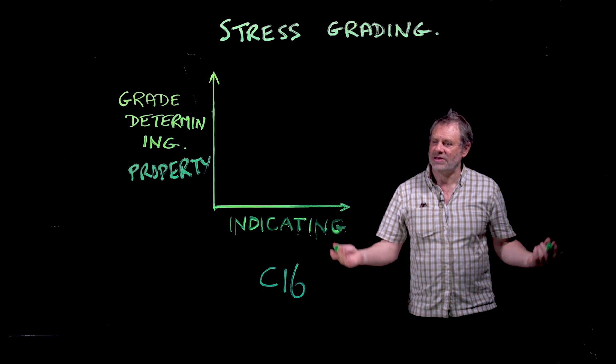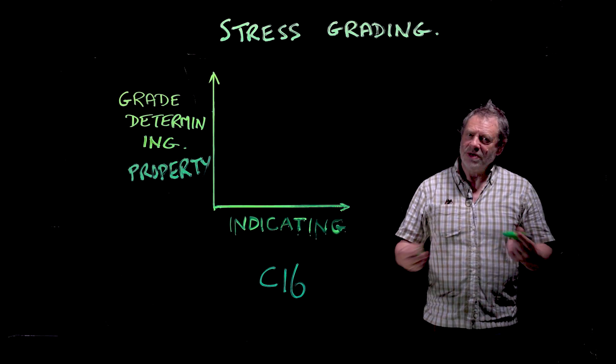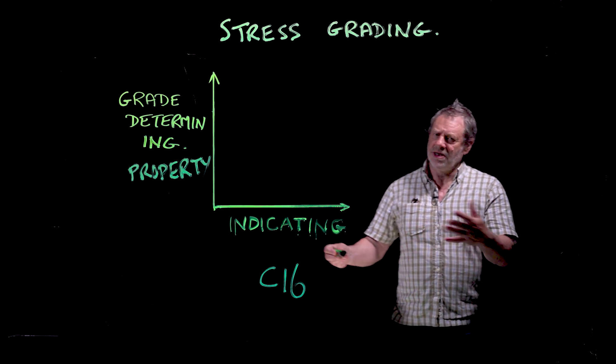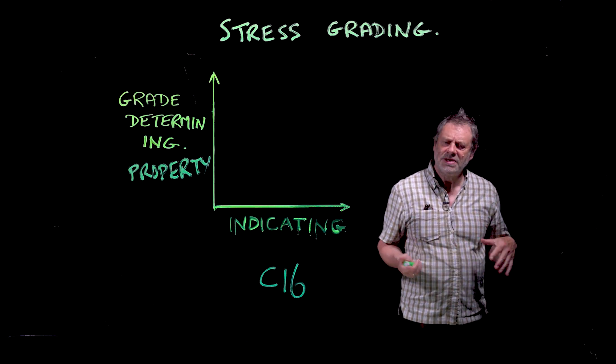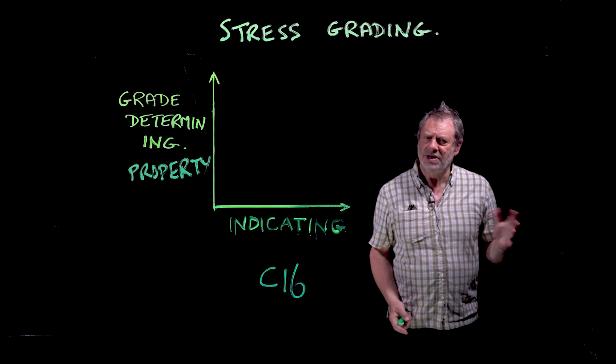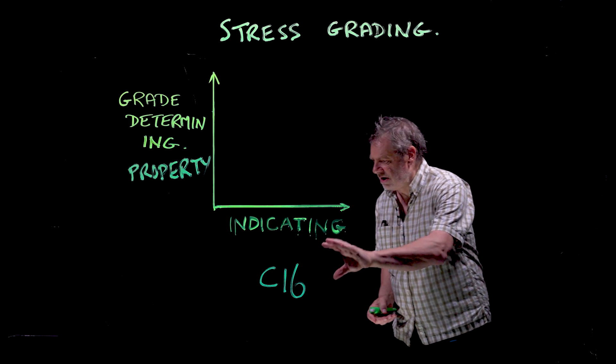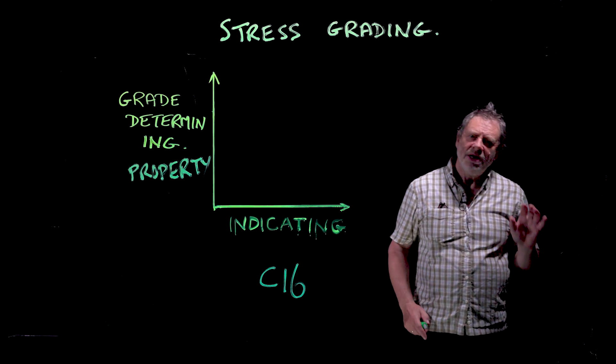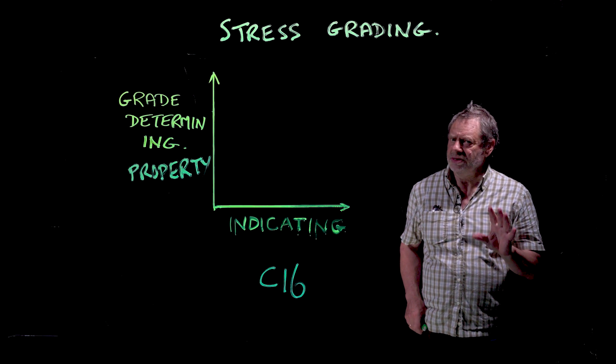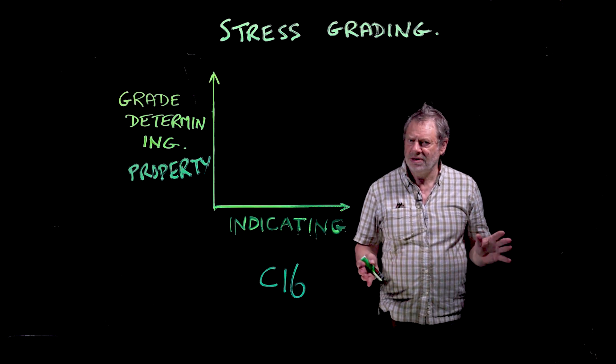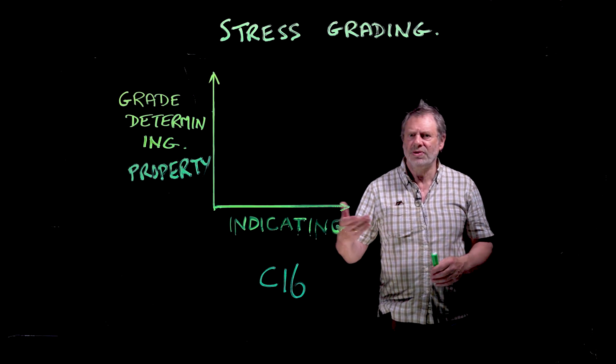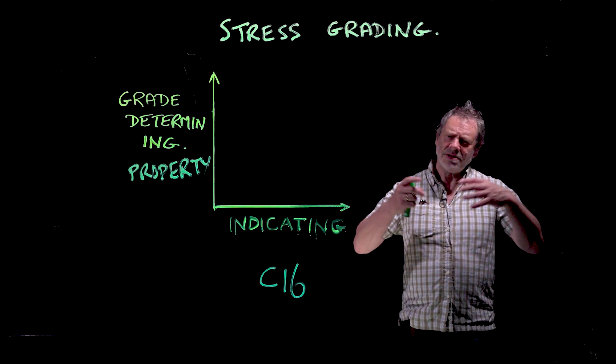You will see various things quoted such as 'this timber is C16' or 'this timber is C24'. Those numbers, C16 and C24, are based upon a very large number of studies. C stands for coniferous, so it's for lower density timber products, very often things like spruce and pine.